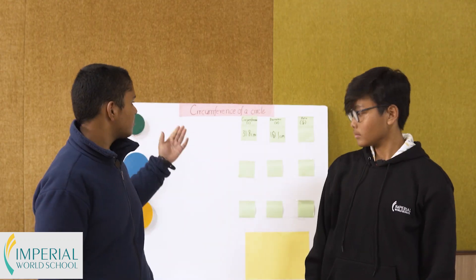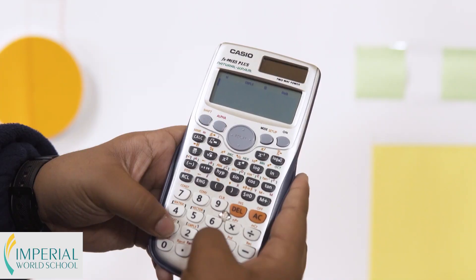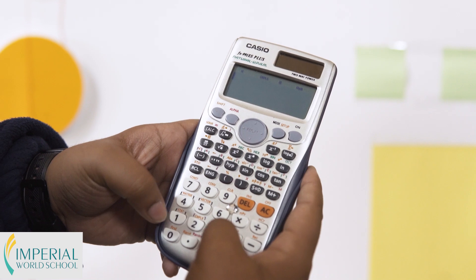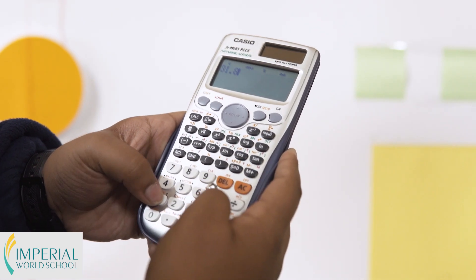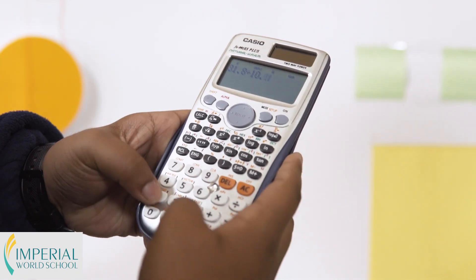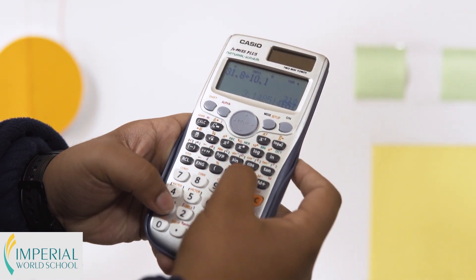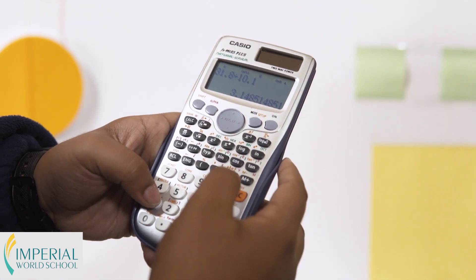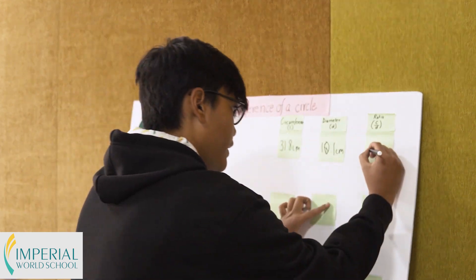Now that we have found the circumference and diameter, I will find the ratio of these two by using this calculator. The circumference is 31.8 centimeters and the diameter is 10.1 centimeters. When you divide these two, the answer is 3.14, which is the approximate value of pi. That means C upon D equals pi.